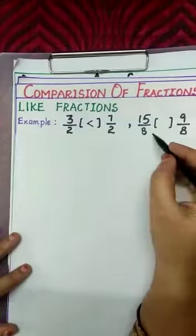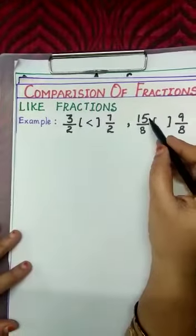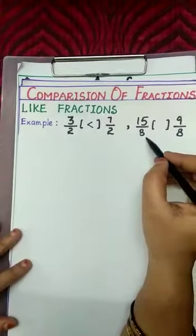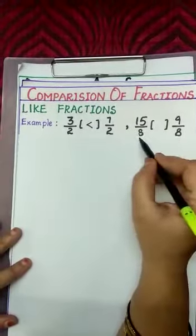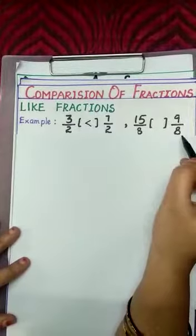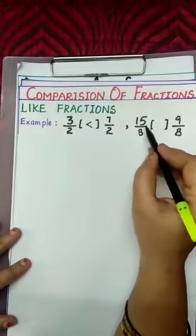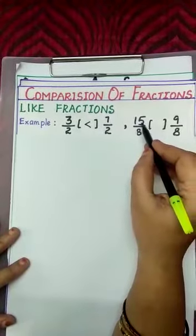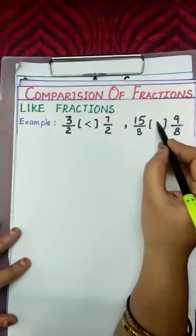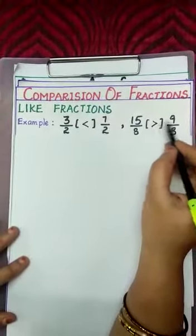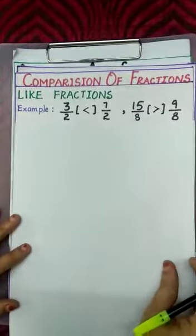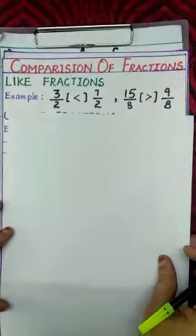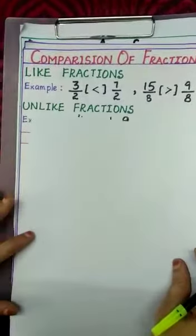Now the second example: 15/8 and 9/8. As they have the same denominators, see the numerators 15 and 9. 15 is greater than 9, so 15/8 is greater than 9/8.